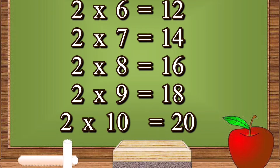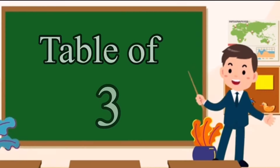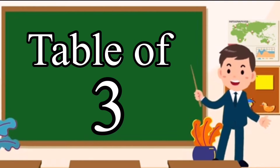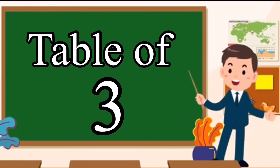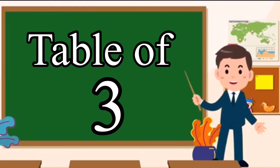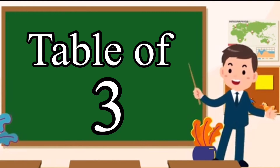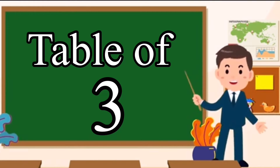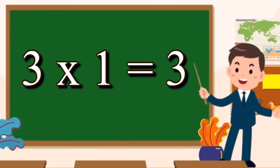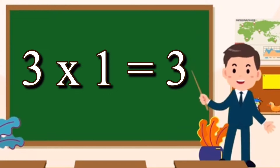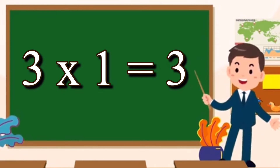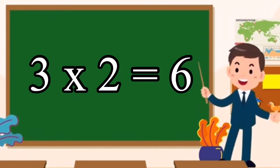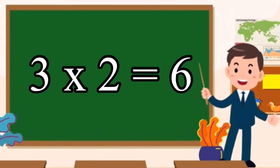2 tens are 20. Table of 3. 3 ones are 3. 3 twos are 6.